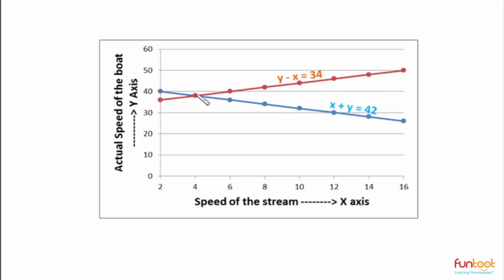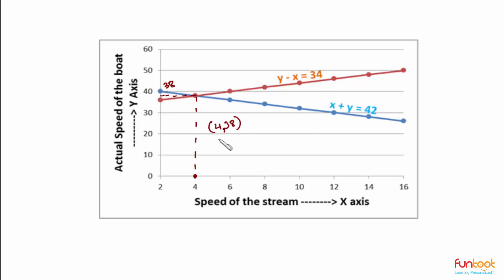We can see that the two lines intersect at a point where the speed of the stream is 4 km per hour and the actual speed of the boat is 38 km per hour. So (4, 38) is the solution pair for both lines.